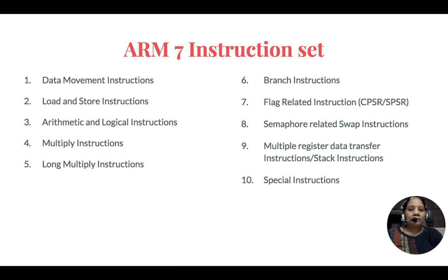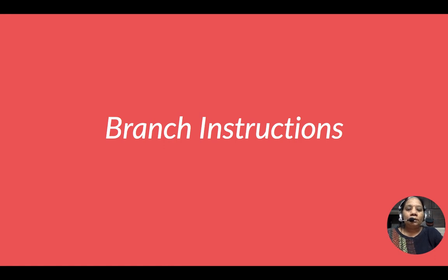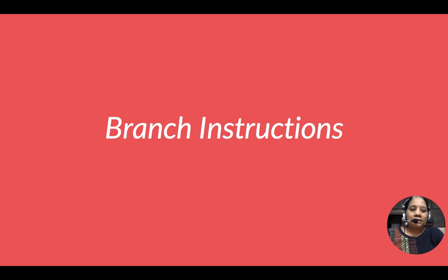All together, ARM7 has 10 categories of instructions. In this video we will cover four categories: branch, data movement, load and store, and arithmetic and logic instructions. Usually the list is in a different order, but I am purposely starting with branch instructions — you may understand why at a later part. Branch instructions play a major role in ARM7, as you will understand as we go through the video.